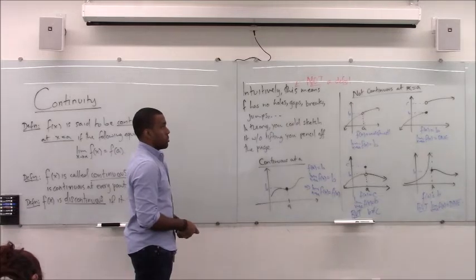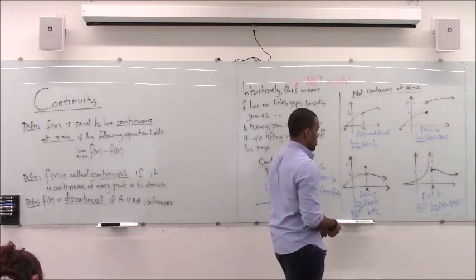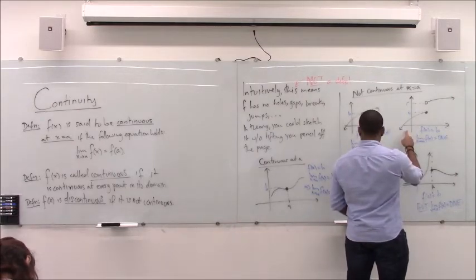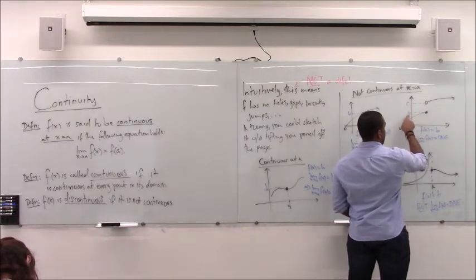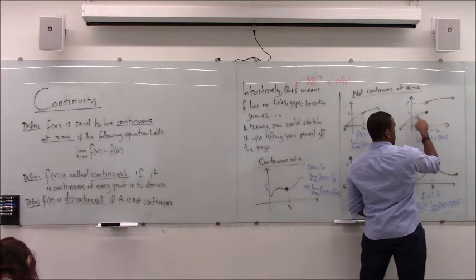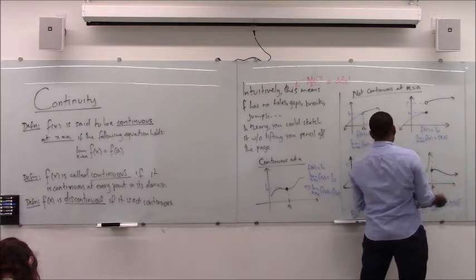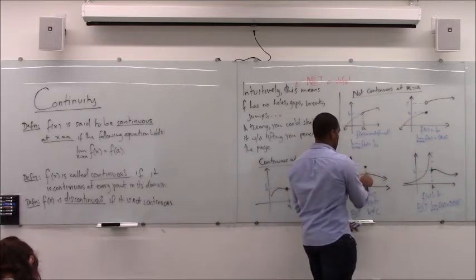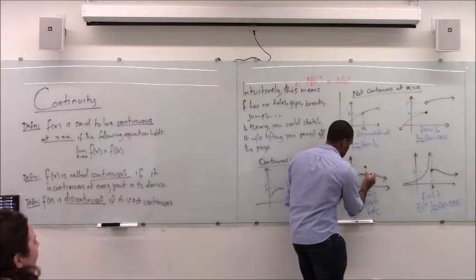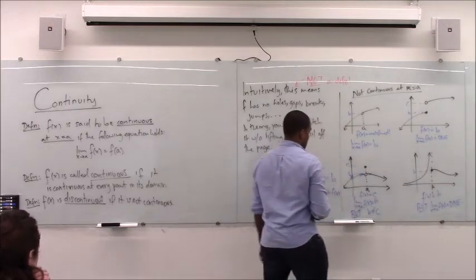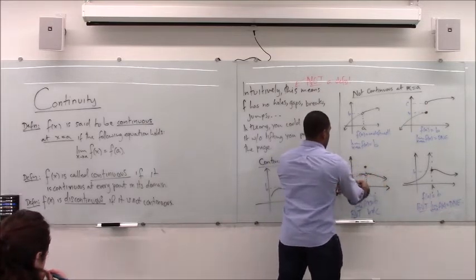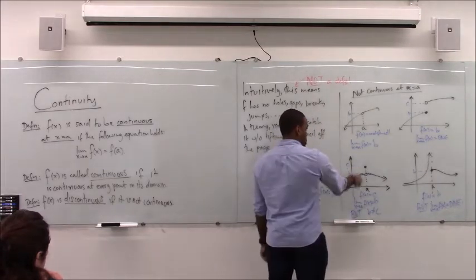Student: Can you explain the difference between the top-right and bottom-left examples, and why the limit doesn't exist in one but does in the other? Instructor: Here the limit does not exist because the left-hand limit is b and the right-hand limit is c, so the overall limit doesn't exist. The output is actually b since it's a filled-in circle, but the limit isn't anything. Over here, the limit does give a value — it converges to the y-value at the gap. However, the actual output is where the filled-in point is, which is c. So the limit converges to b, but the actual output is c, those don't match — that creates a disruption.